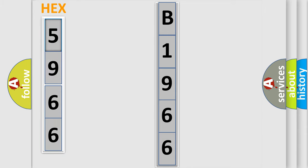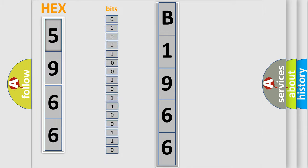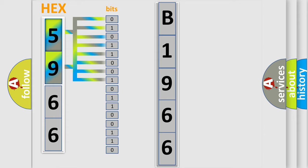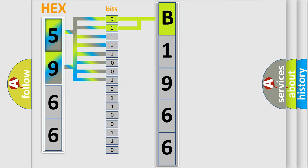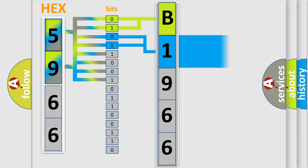The error code is split into two bytes consisting of 16 bits. One bit is the basic unit that each computer works with. The bit has two logical states: zero, low level, and one, high level. By combining the first two bits, the basic character of the error code is expressed. The next two bits again determine the second character.